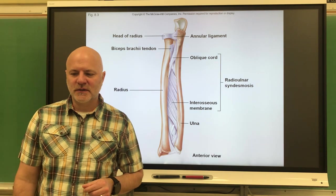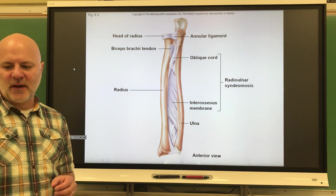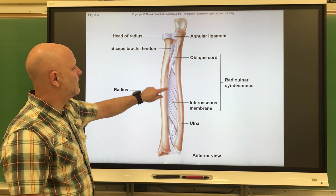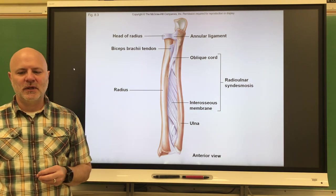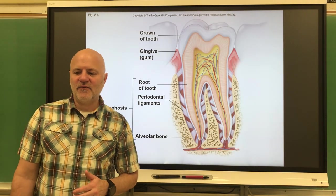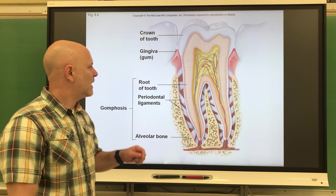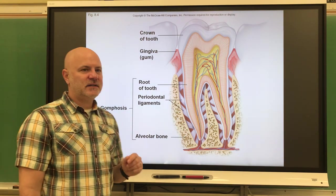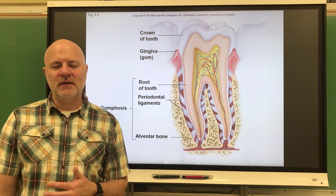Next is a syndesmosis, a joint in which the bones are united by a ligament or sheet of fibrous tissue. We find this between the ulna and radius, and also between the tibia and the fibula. Next is a gomphosis, a joint in which a cone-shaped process is fastened in a bony socket, with fibers attaching them. This is what we see with teeth into the mandible or maxilla.